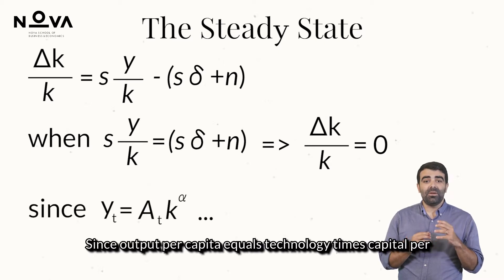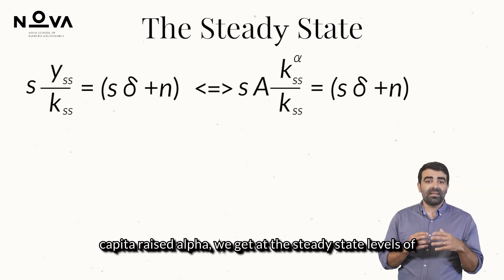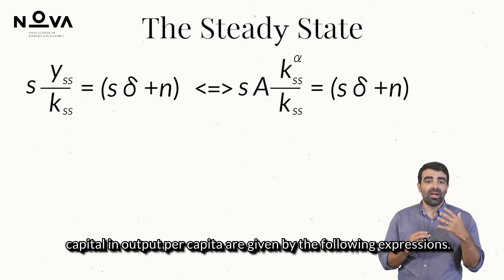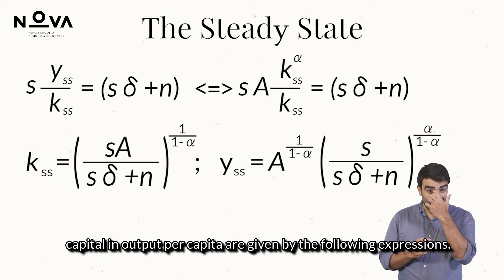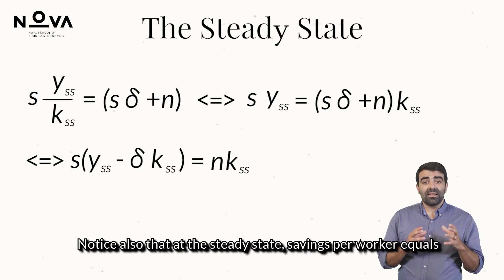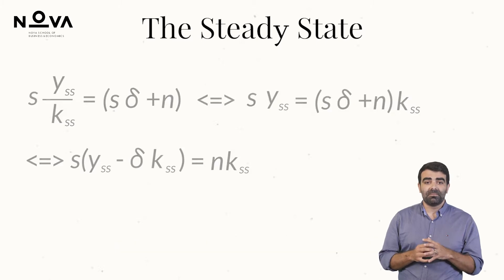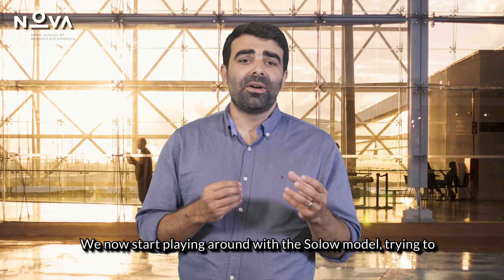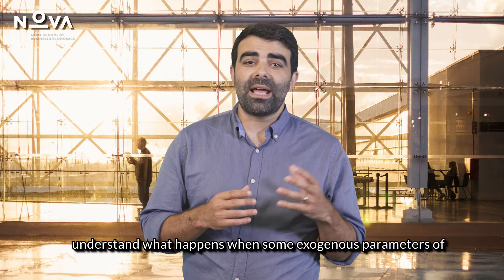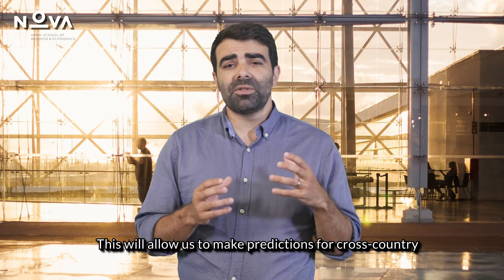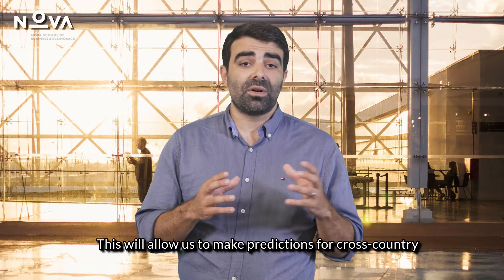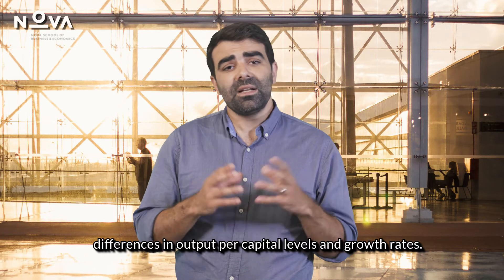Since output per capita equals technology times capital per capita raised to alpha, we get that the steady-state levels of capital and output per capita are given by the following expressions. Notice also that at the steady-state, savings per worker equals the amount of capital provided for each worker. We now start playing around with the Solow model, trying to understand what happens when some exogenous parameters change, which will allow us to make predictions for cross-country differences in output per capita levels and growth rates.